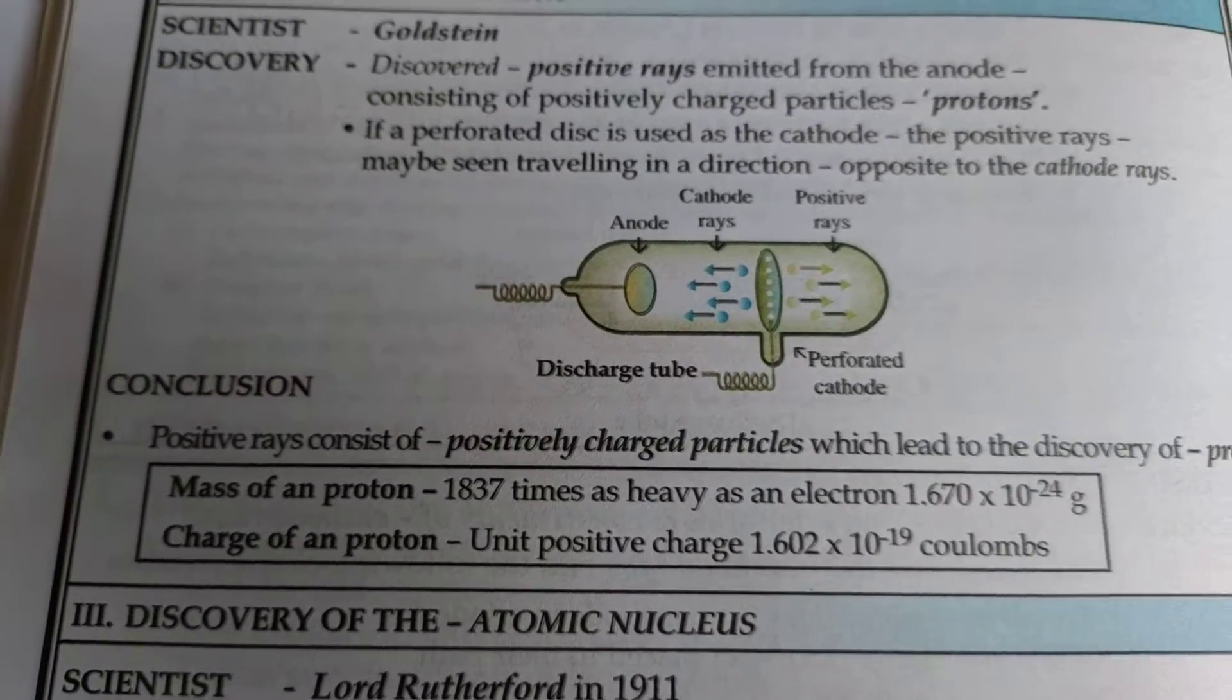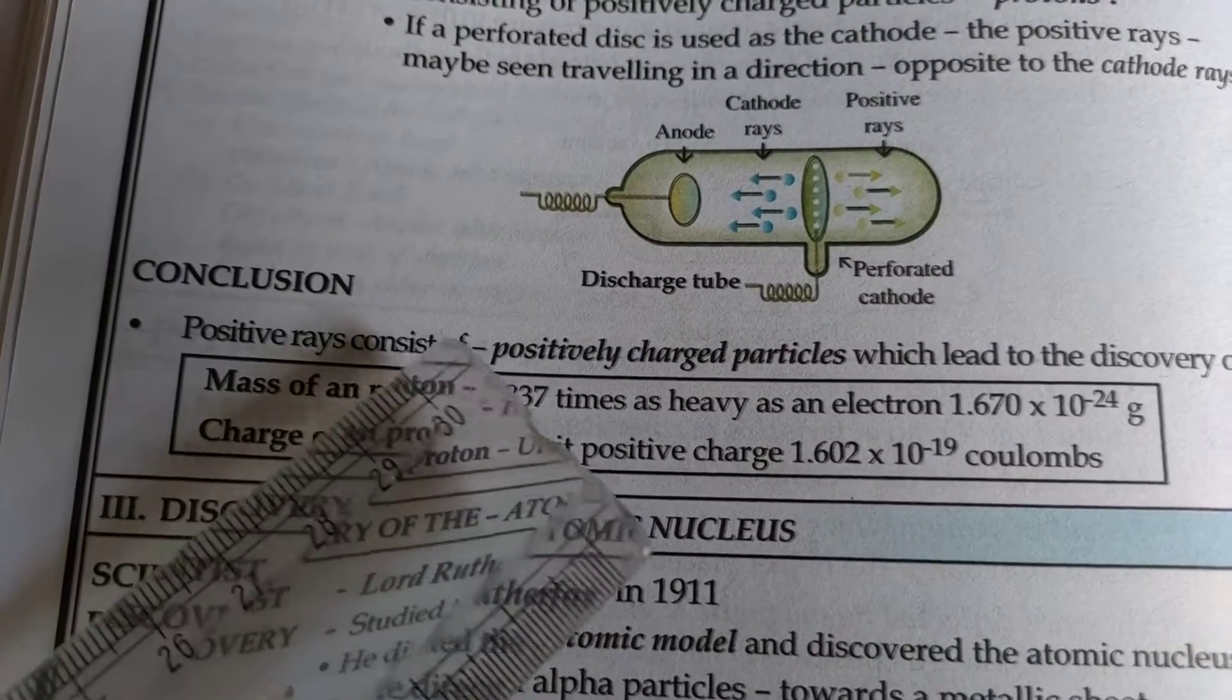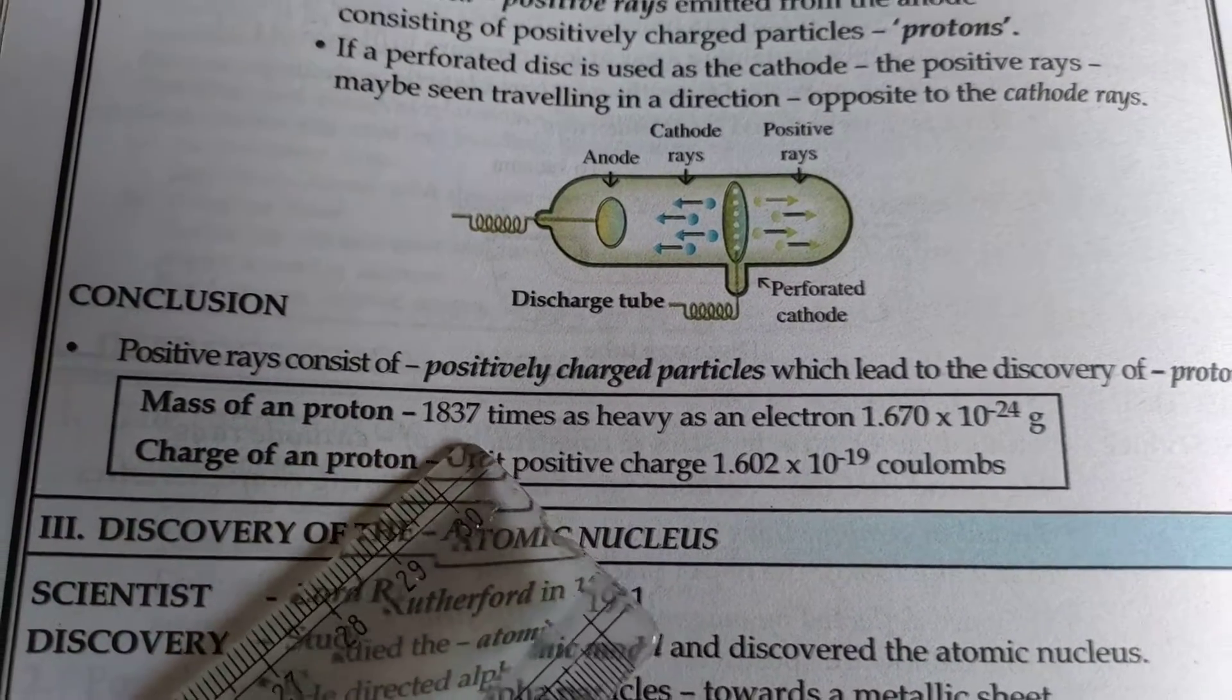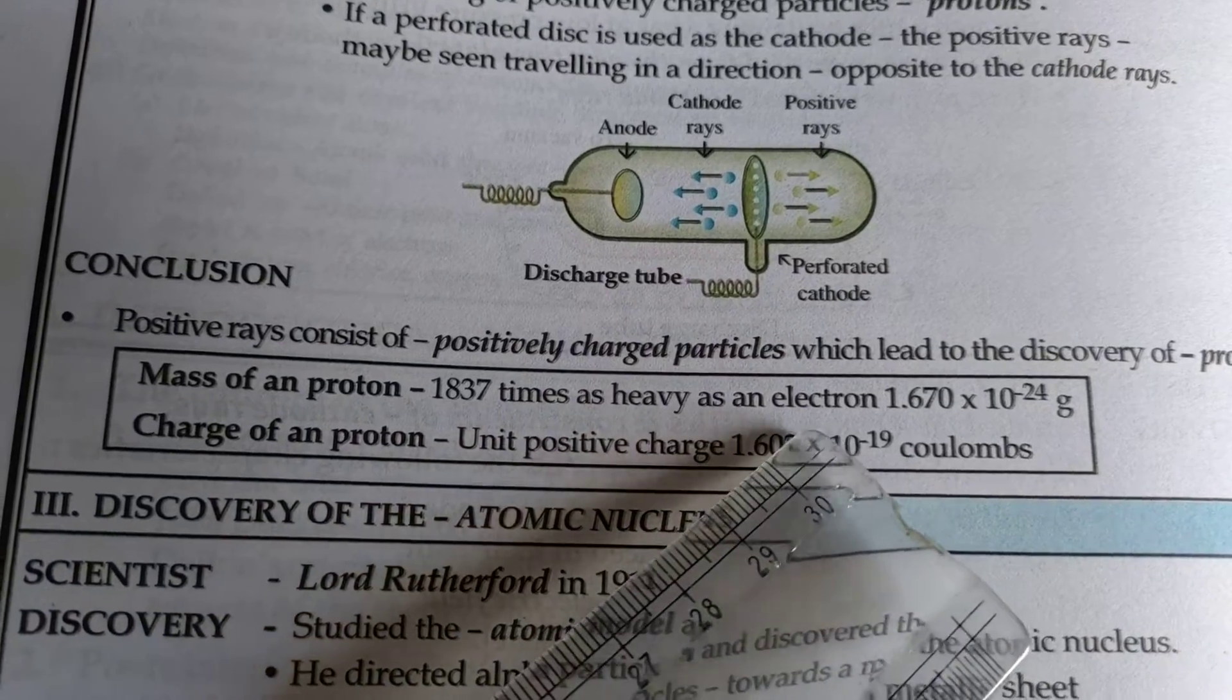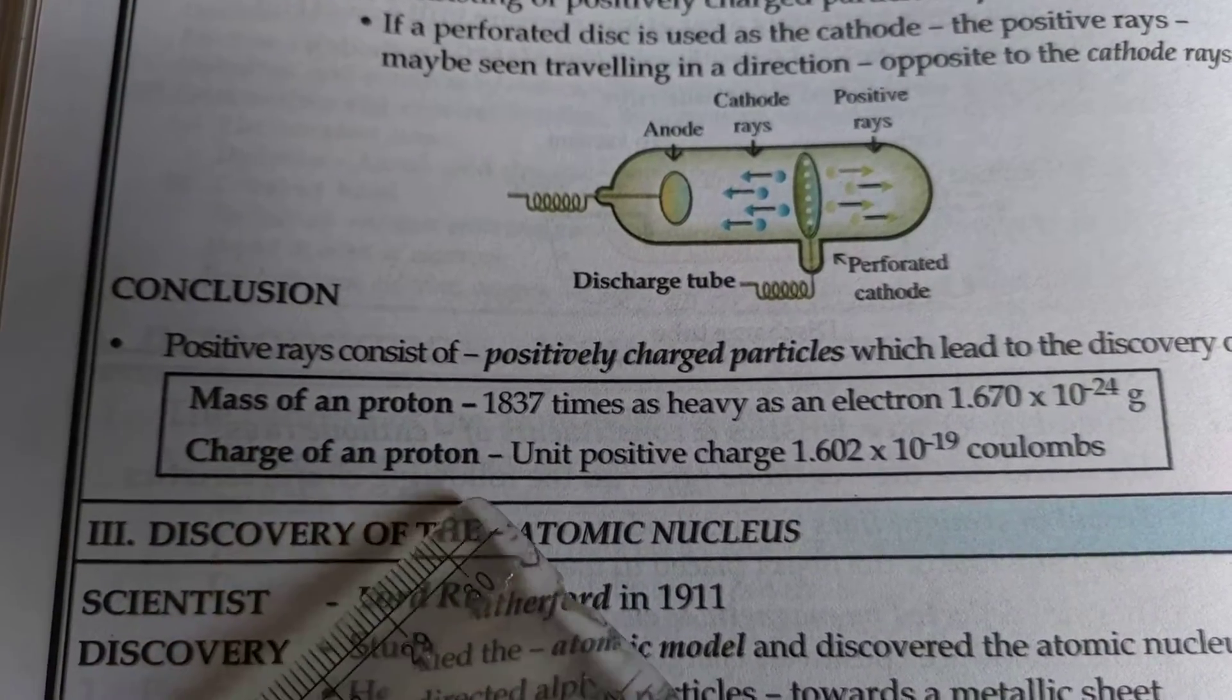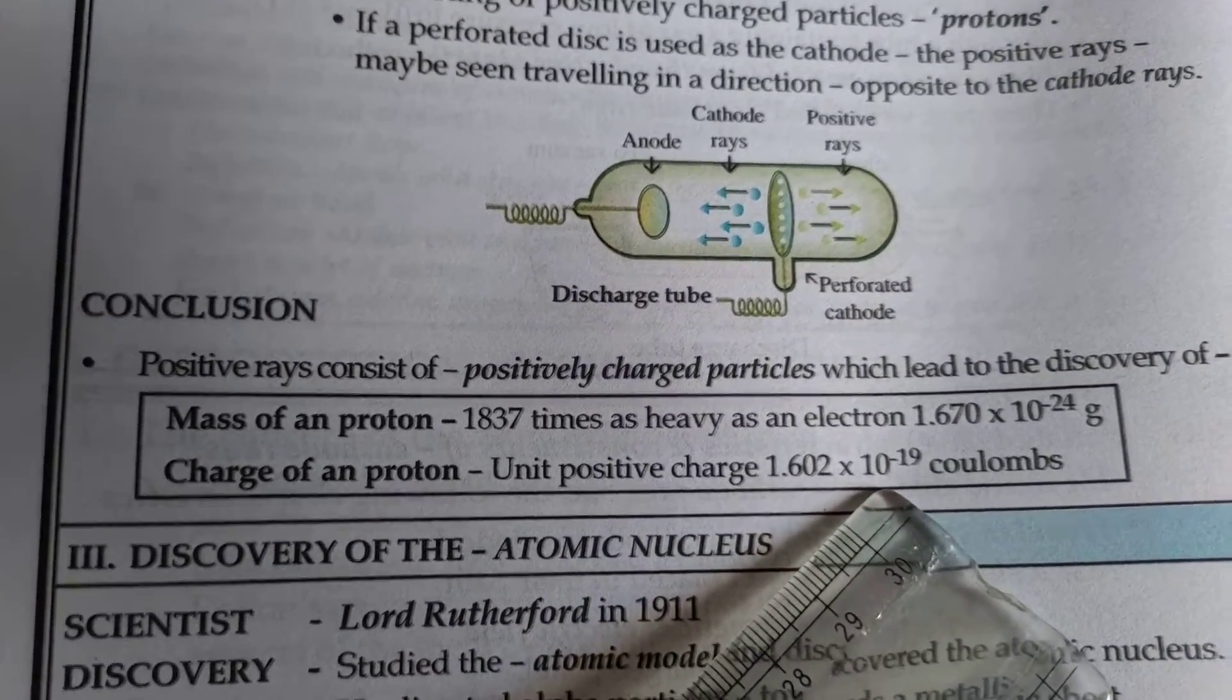With the very experiment that was discovered, it was found that a positively charged particle consists of the proton. The mass of the proton was found to be 1837 times as heavy as the electron, that is equivalent to the mass of hydrogen. The unit positive charge of a single proton was found to be 1.6 into 10 to the power minus 19 coulombs.